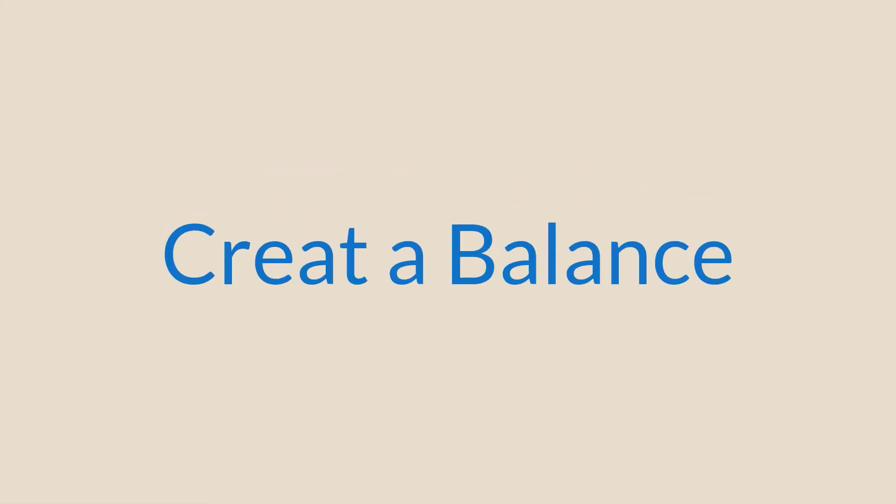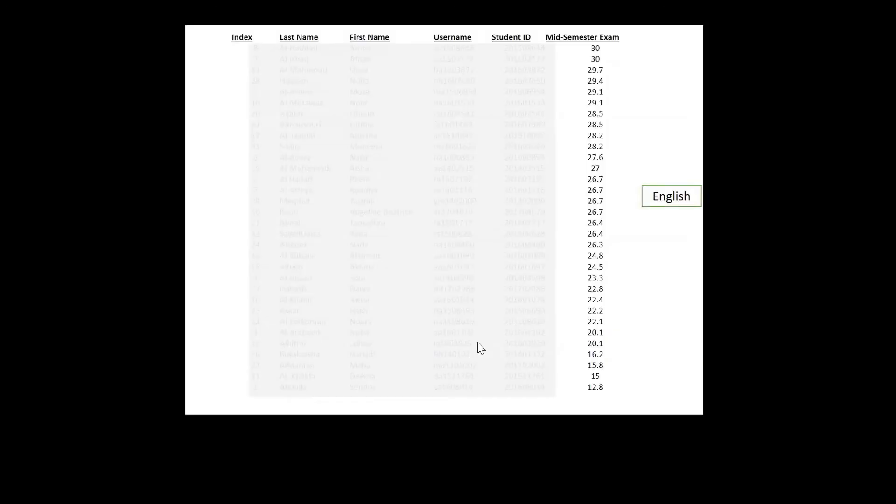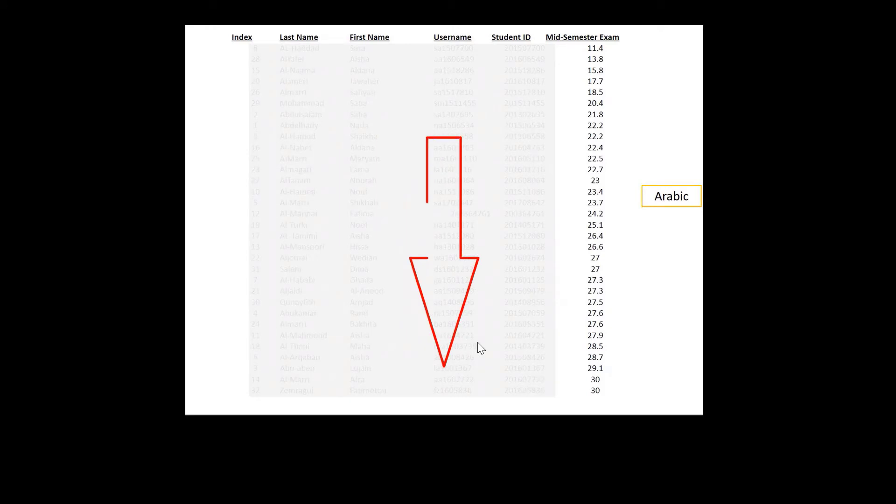The combined number of all students was 64. They were allocated to 16 different groups. Each group was made up of four students. The purpose was to create a balance so that each group would have an equal opportunity to do well in the project. I used the mid-semester exam grades to rank students. I ranked the grades for students in the English section from highest to lowest, while ranking the grades for the Arabic students from lowest to highest.